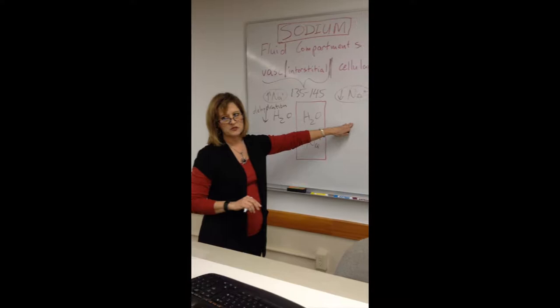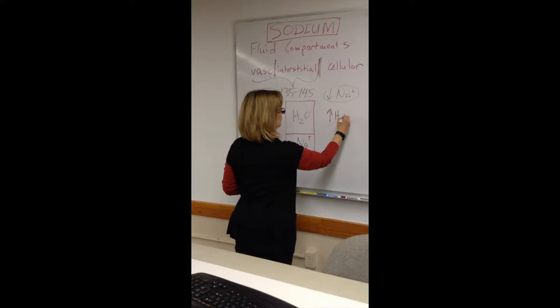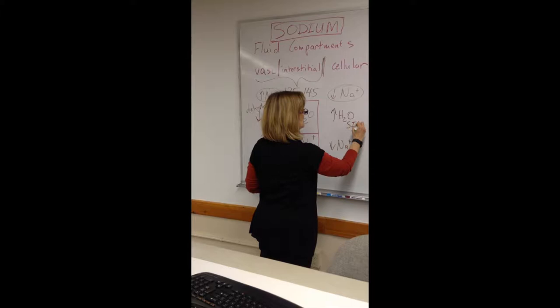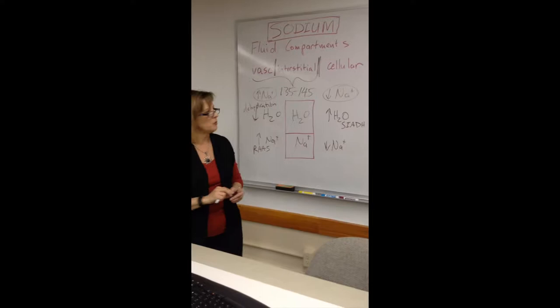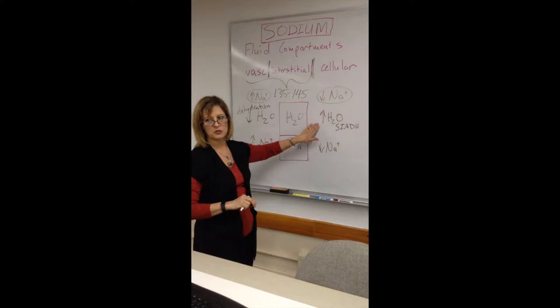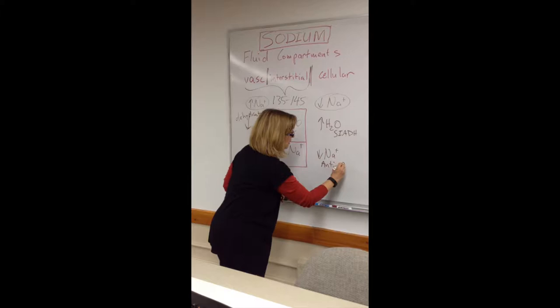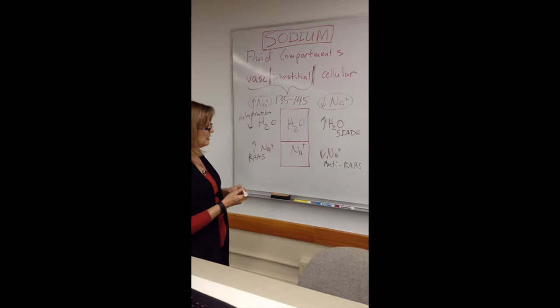If a patient has a problem with the RAAS system — which sequesters sodium — that could potentially raise the concentration as well. On the other side, with sodium being too low, you either have an increase in water diluting it, or a decrease in sodium. An example of increased water would be SIADH, where inappropriate secretion of antidiuretic hormone causes the kidneys to retain water, leading to too much dilution.